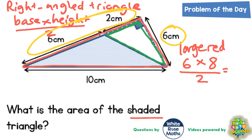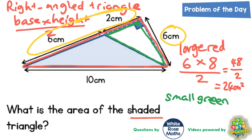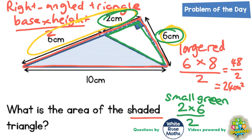Six times eight is 48, and 48 divided by two is 24 centimeters squared. So the large red triangle is 24 centimeters squared in area. Now for the small green triangle: the base and height are two and six, so that's two times six divided by two. Two times six is twelve, and twelve divided by two is six centimeters squared.